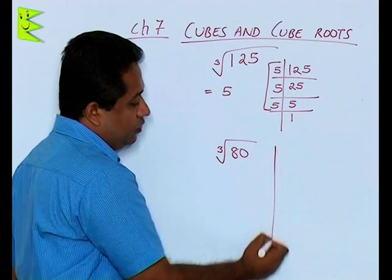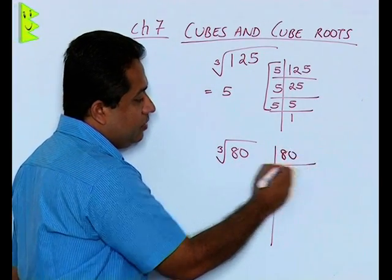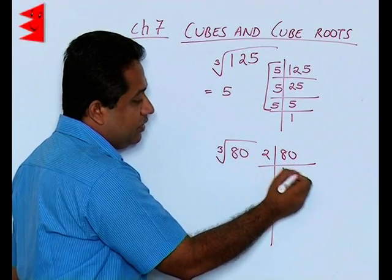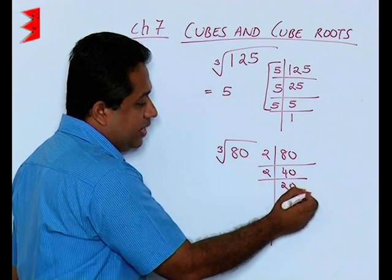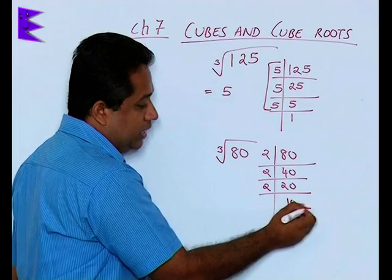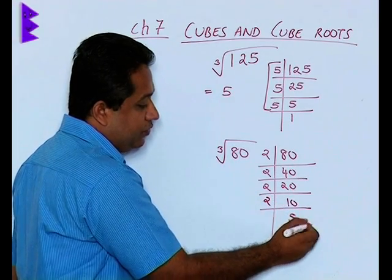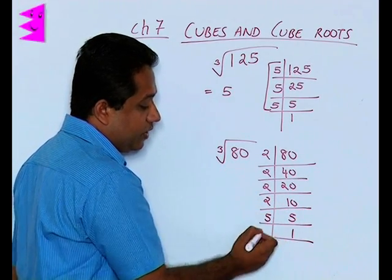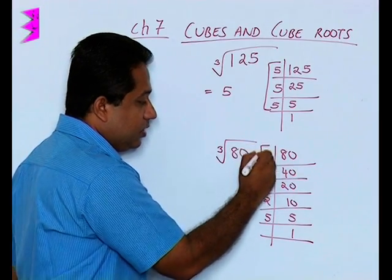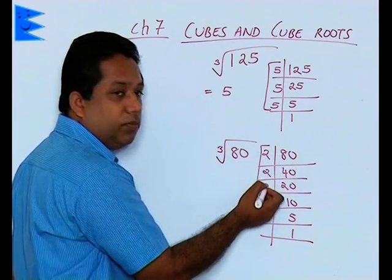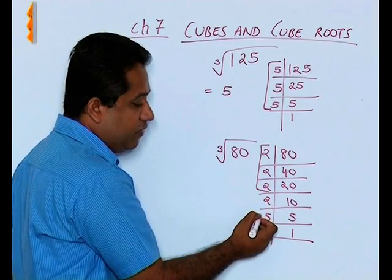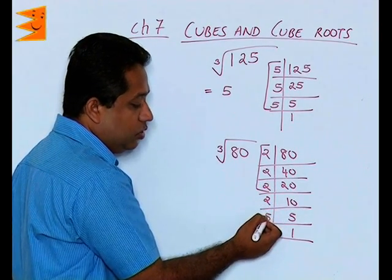So when we find out the factors of 80: 2 40s are 80, 2 20s are 40, 2 10s are 20, 2 5s are 10, and 5 1s are 5. So here, these 1, 2, 3 form a group, but here we find that there is only one single 2 and single 5.